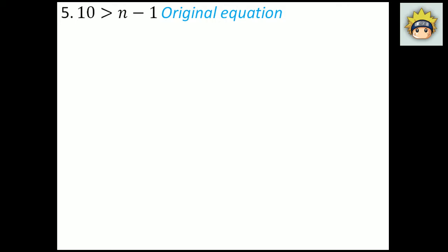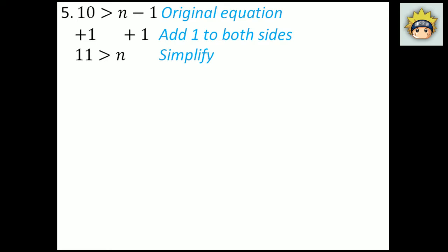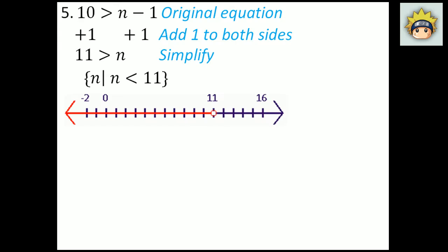Number 5. The original equation is 10 is greater than n minus 1. Add 1 to both sides because that is the inverse property — I'm trying to get n alone. 10 plus 1 is 11, which is greater than n left over on the right-hand side. In set builder notation: n, n is less than 11. It is an open circle on 11 and moves all the way to the left, so n is less than 11. Any value of 10, 9, 8, 7 and so forth would make this valid.